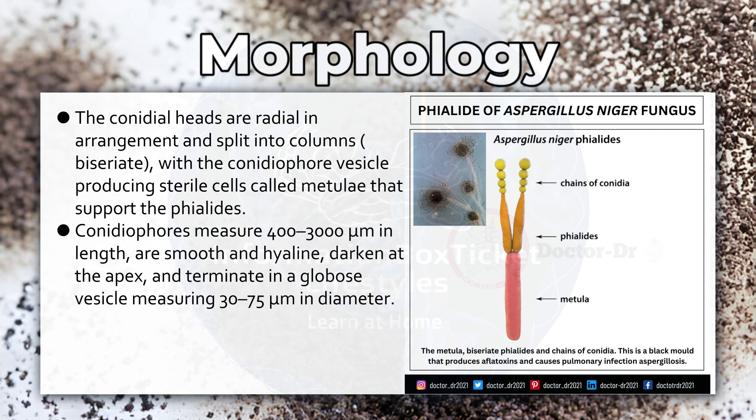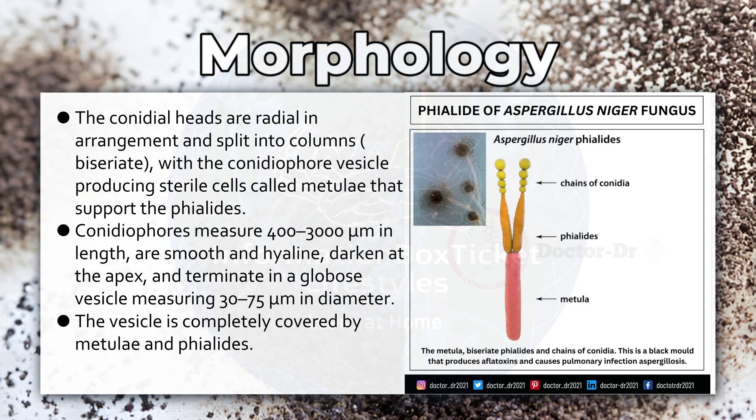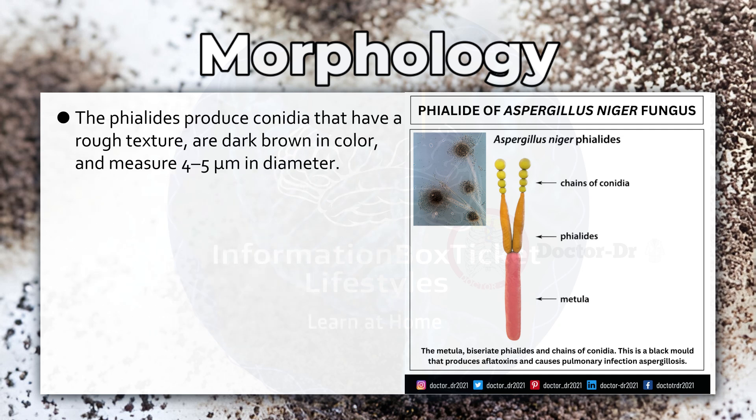Conidiophores measure 400 to 3,000 micrometers in length, are smooth and hyaline, darken at the apex, and terminate in a globose vesicle measuring 30 to 75 micrometers in diameter. The vesicle is completely covered by metulae and phialides. The phialides produce conidia that have a rough texture, are dark brown in color, and measure 4 to 5 micrometers in diameter.